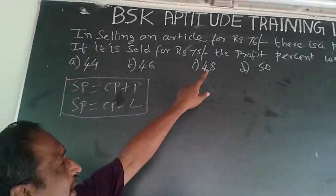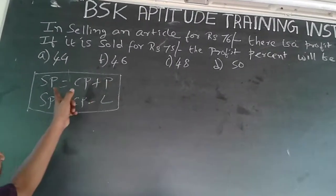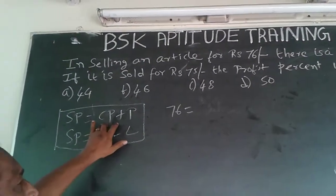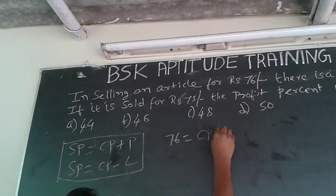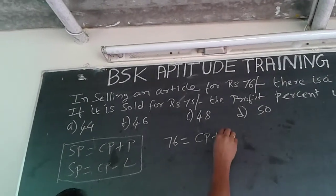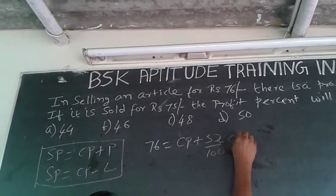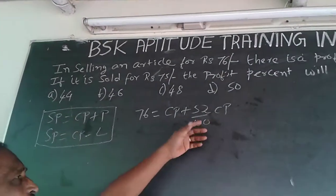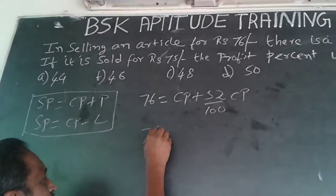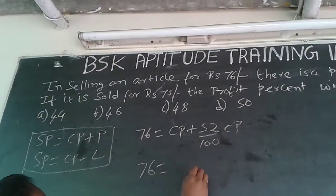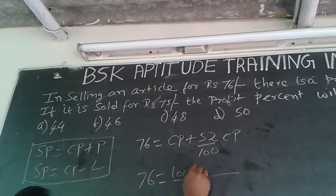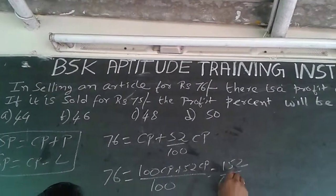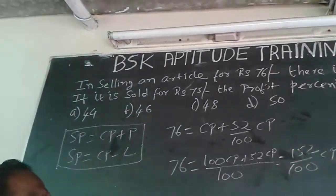They are selling an article at Rs. 76, so the selling price is 76. Applying the formula: 76 will be equal to CP plus 52% of CP, which is 52/100 of CP. Totalling this, 76 = 100CP/100 + 52CP/100, which gives 152/100 of CP.